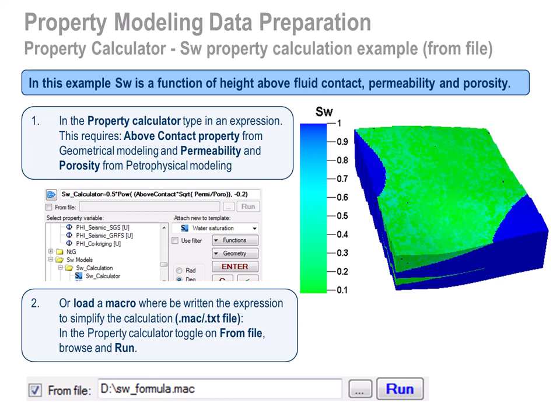Or in the same folder, right-click, import, on selection select function XY ASCII format to import a pre-existing function file. The function should have one vertical column with height and one with SW values. Transfer height above contact to SW property using the function. In the properties folder, right-click, select calculator, and type SW equals function_name(above_contact), and use SW template to make a new SW property.